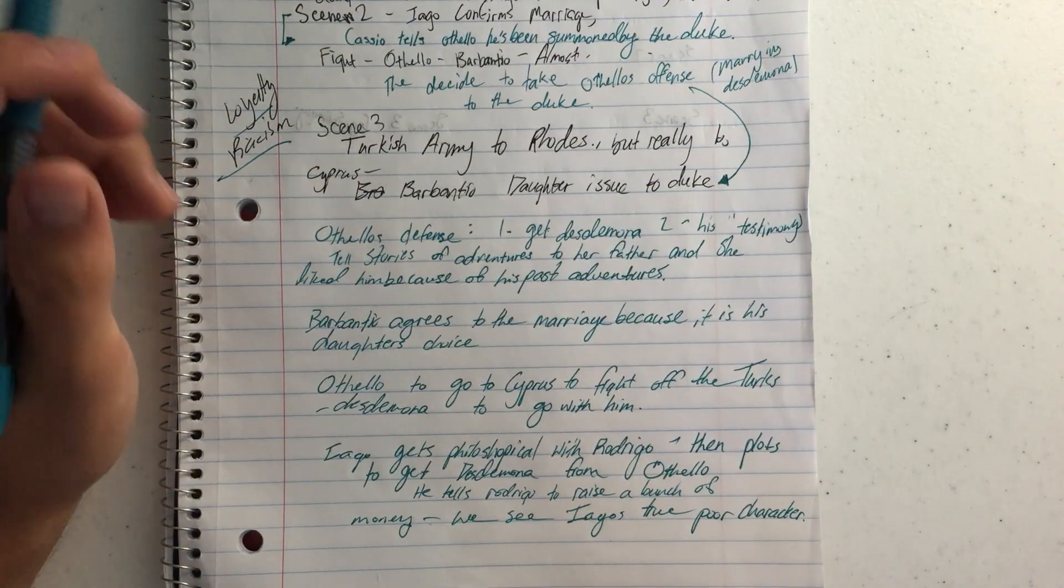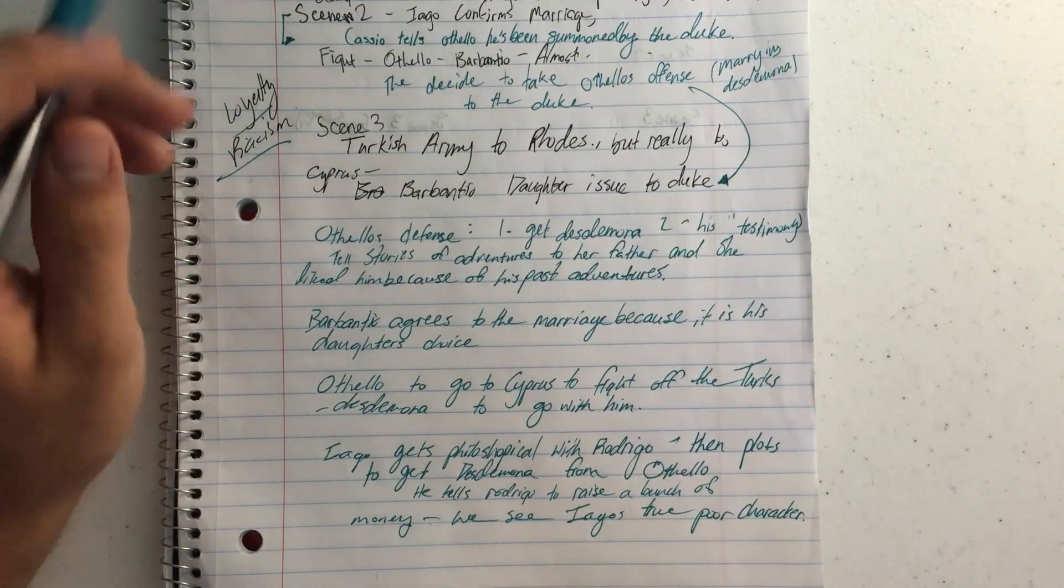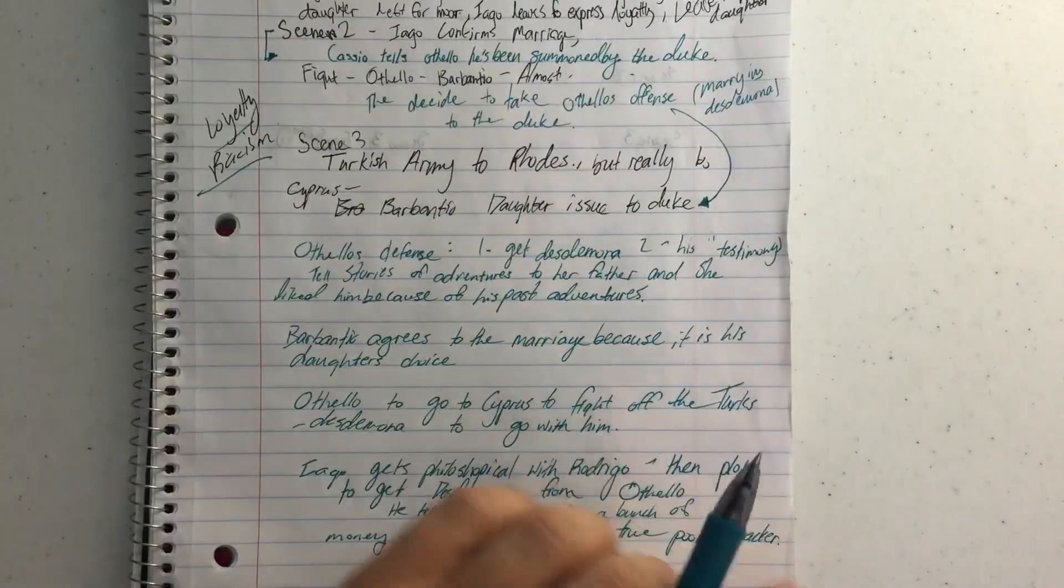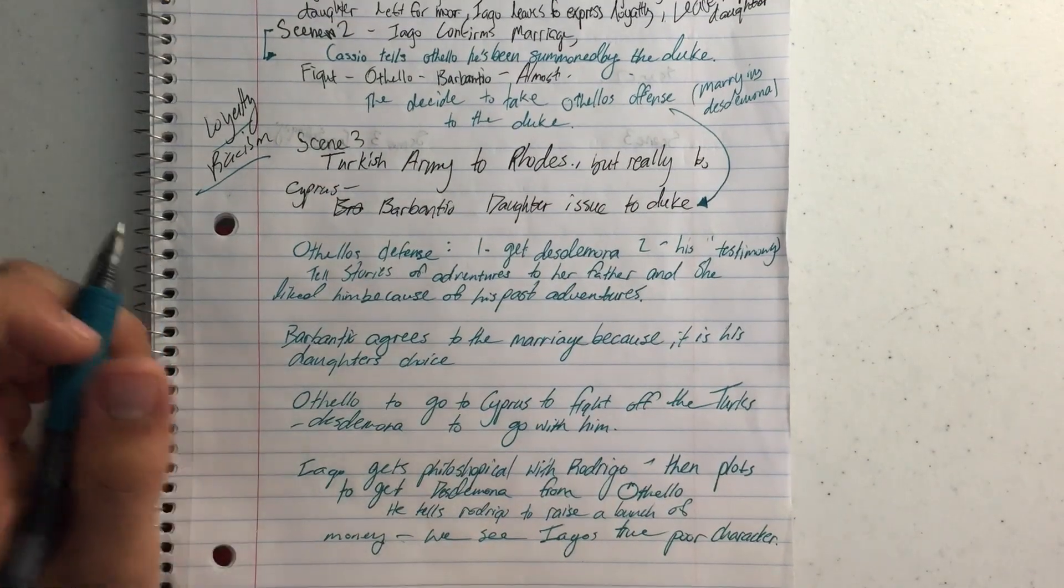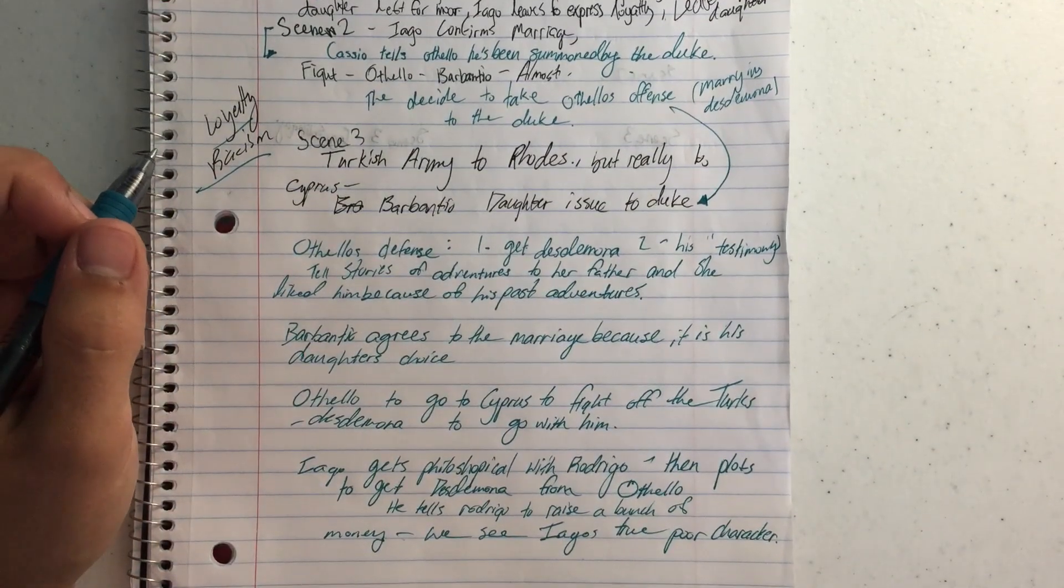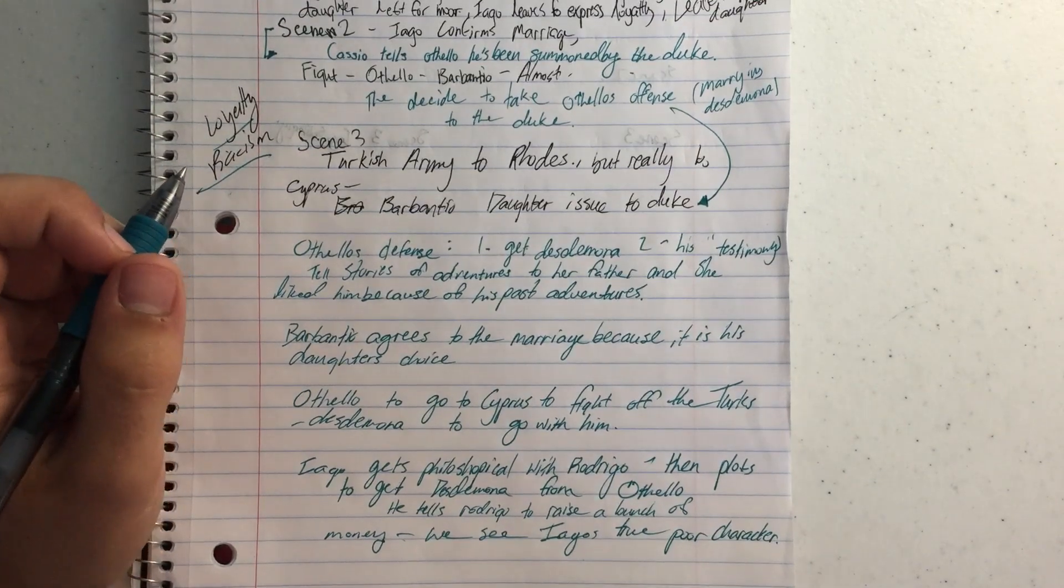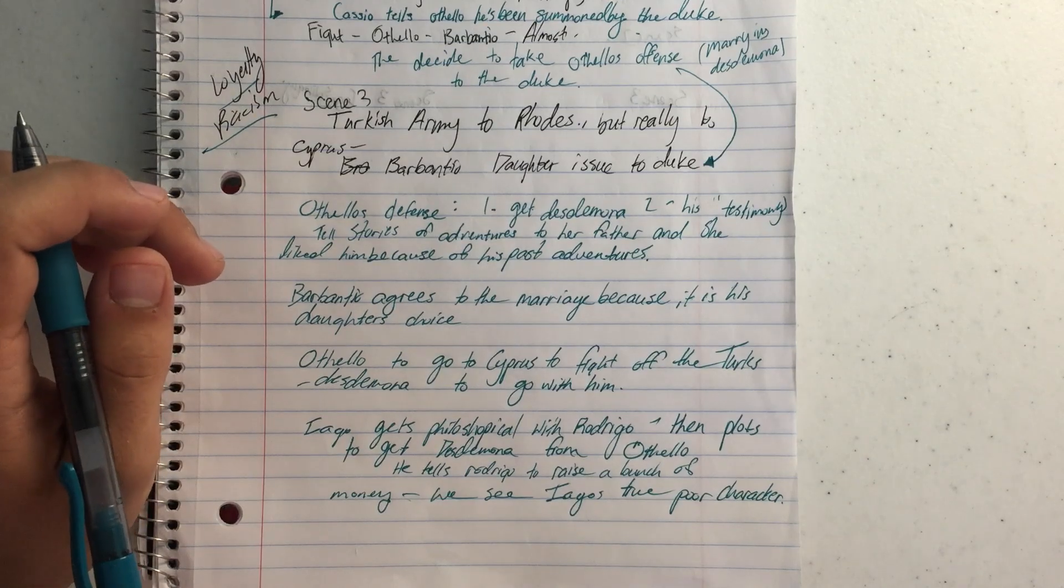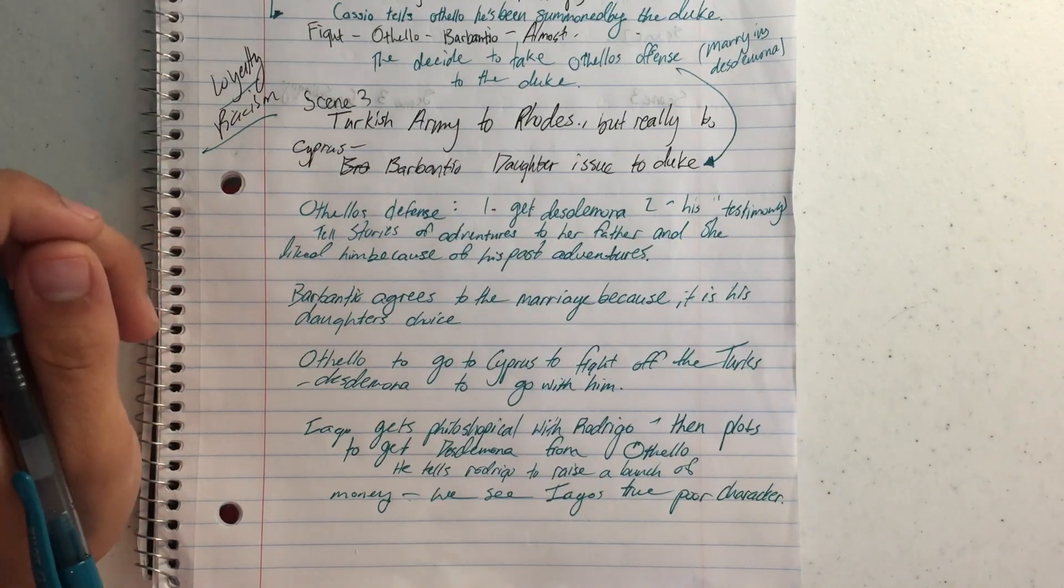Then Othello tells how Brabantio would invite him over, and he doesn't know much about anything except for war. Othello says he'd talk to Desdemona, or Desdemona would talk to him and say, hey, I love your stories. And because of that, I like you a lot. Because Brabantio hears this story, he's like, okay, well, wait for Desdemona. Then Desdemona shows up and confirms what Othello said.